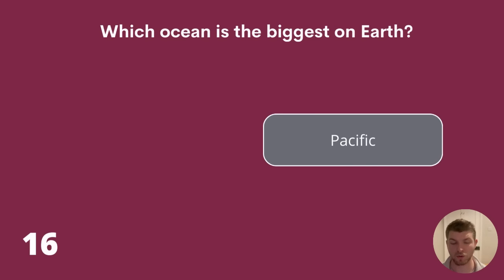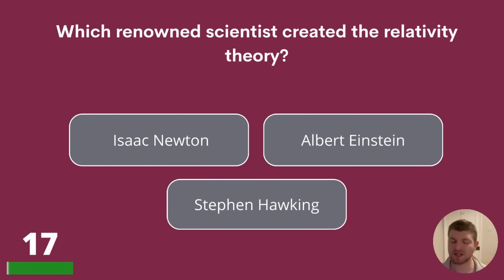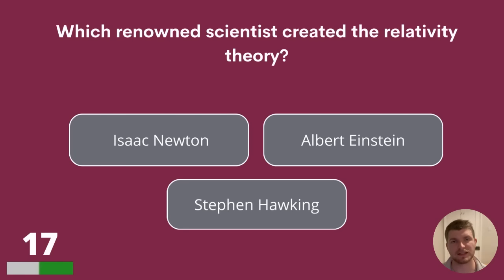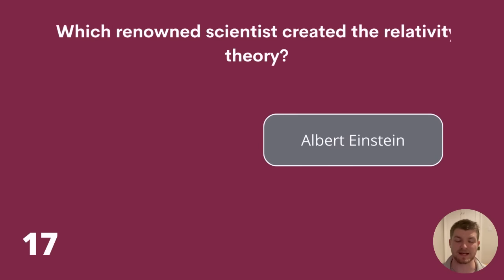Question 17. Which renowned scientist created the relativity theory? Isaac Newton, Albert Einstein or Stephen Hawking? The answer is Albert Einstein.